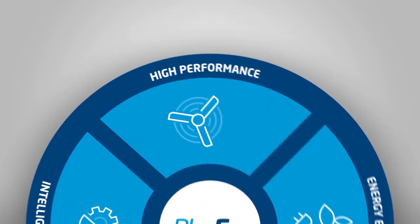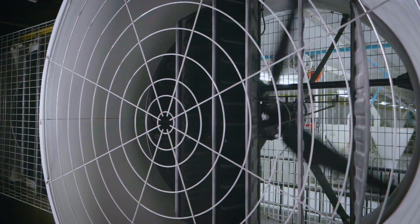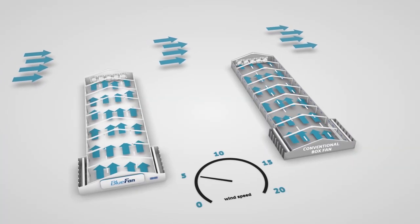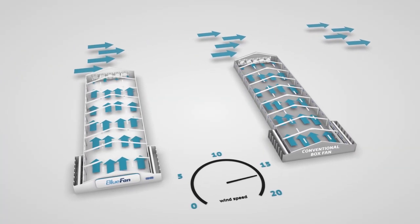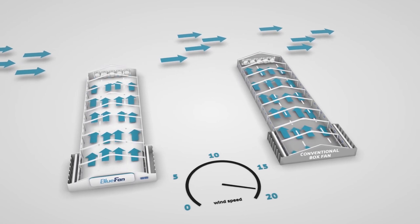BF50 combines minimum energy consumption with a high airflow ratio. The pressure stable design enables the fans to run efficiently. It always ensures optimum climate conditions in the livestock house.